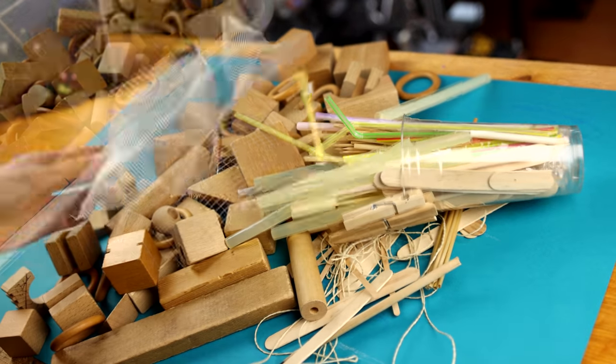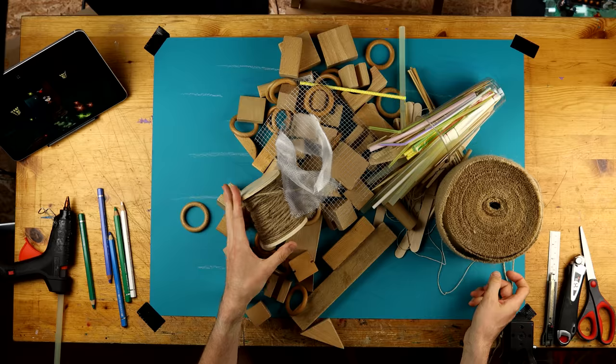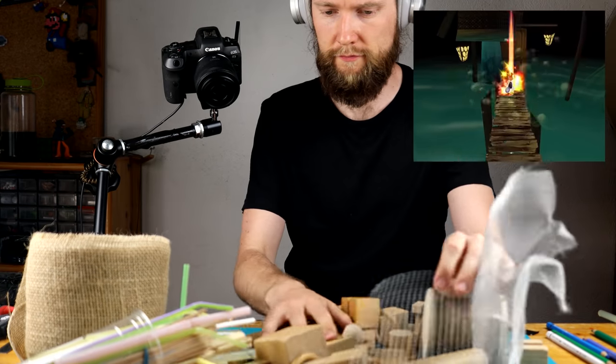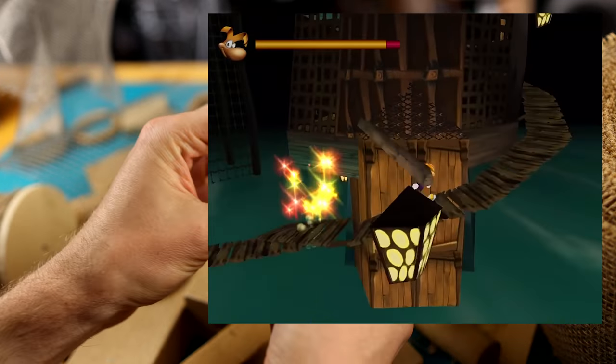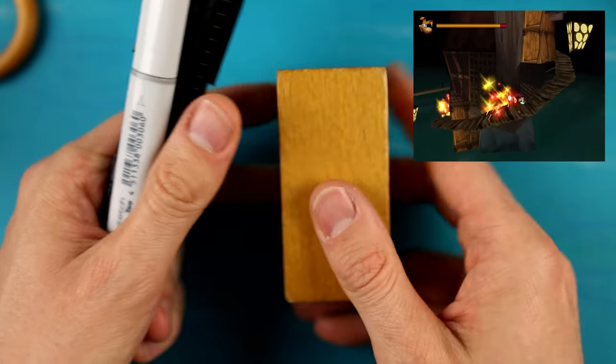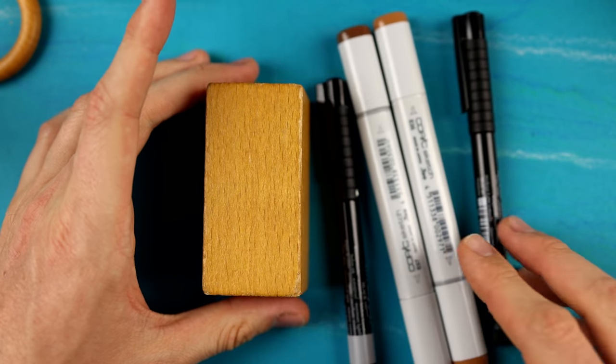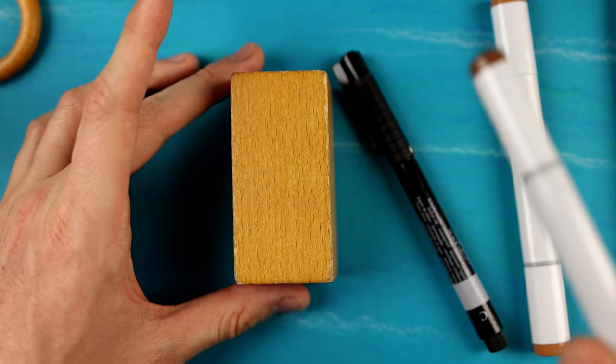These are today's materials. We have a lot of wood, different types of wire and even fabrics and clay because we are building the precipice. This is one of my favorite levels from the well-known N64 game Rayman 2 The Great Escape.